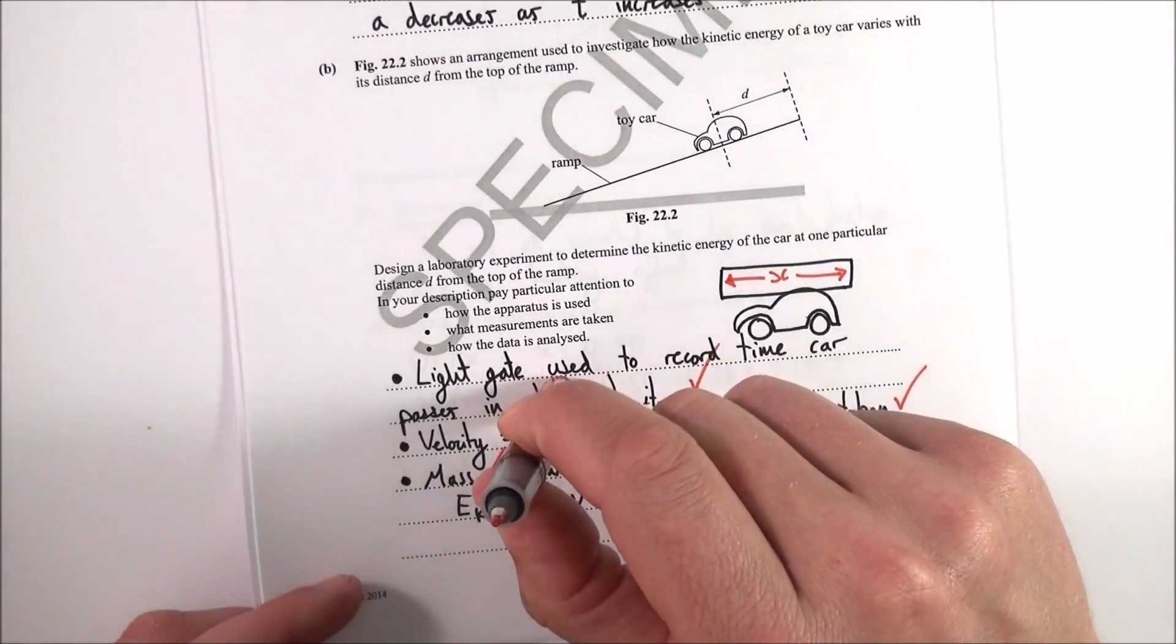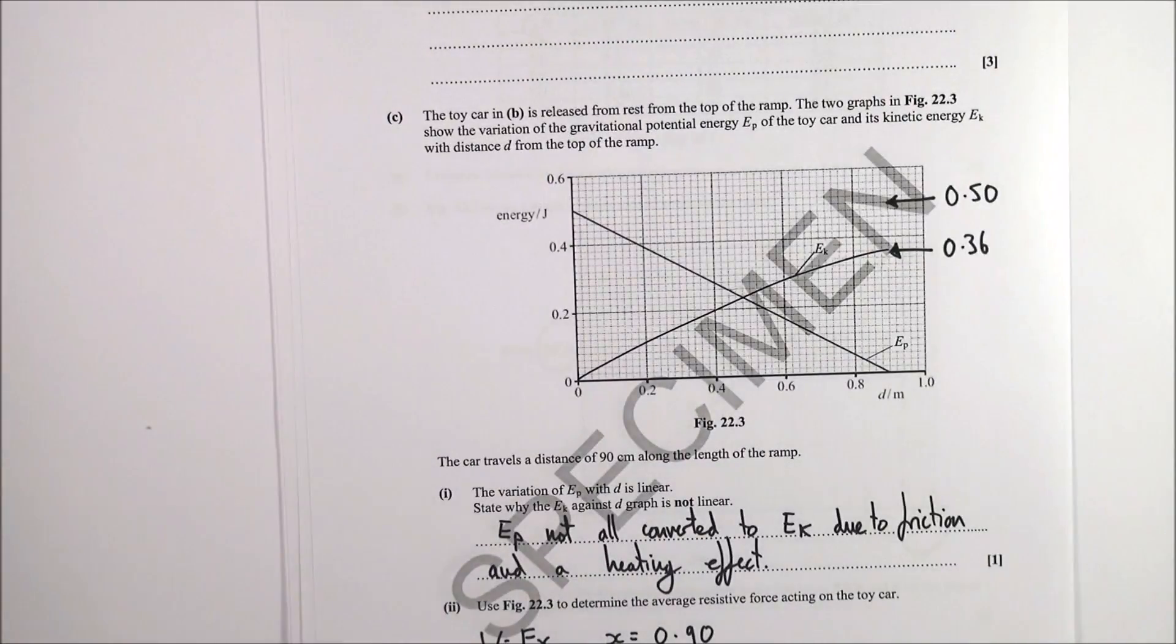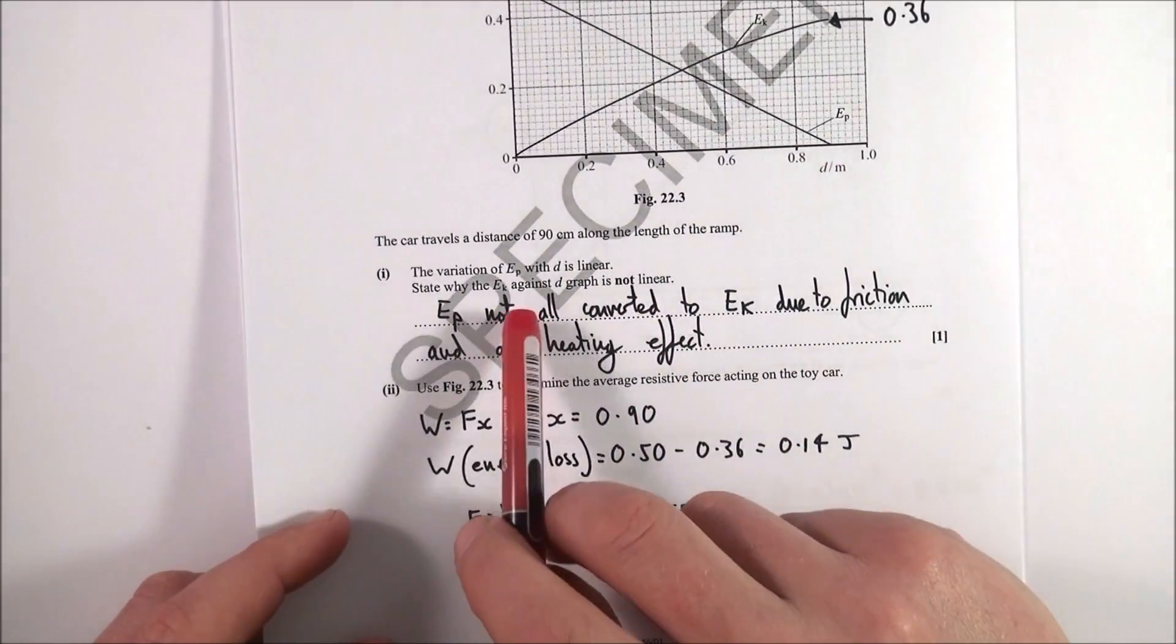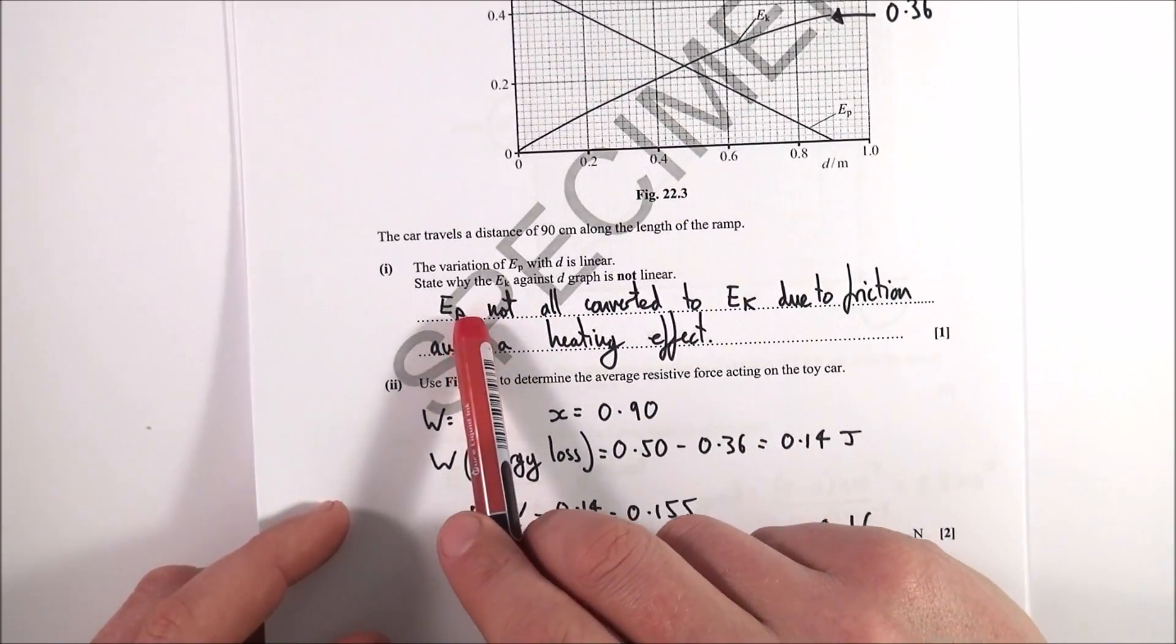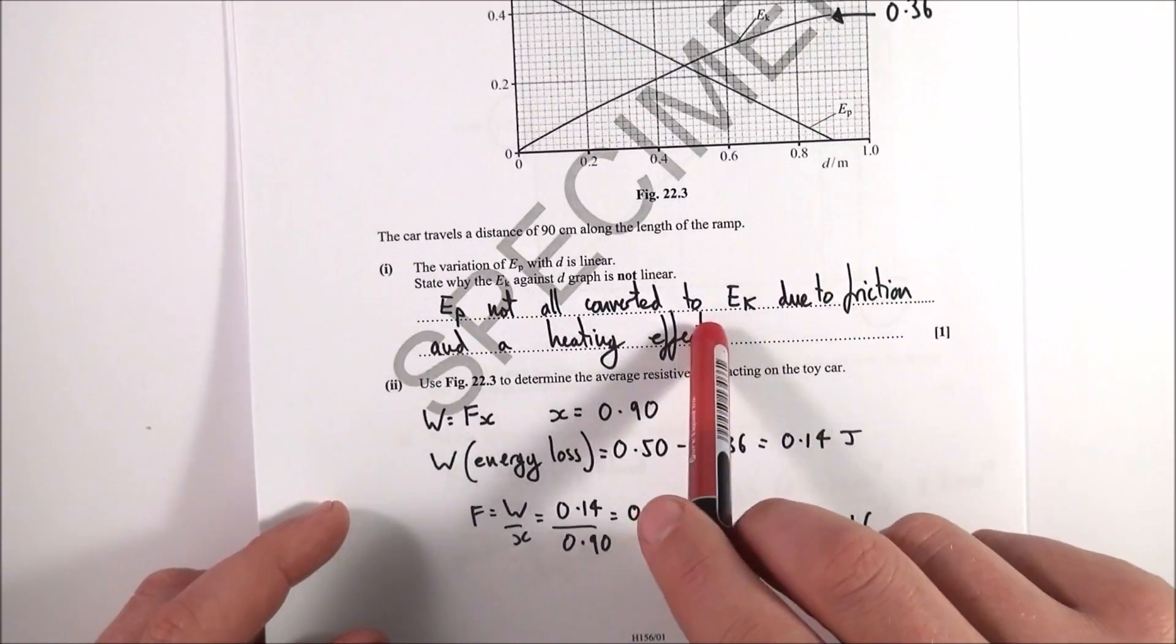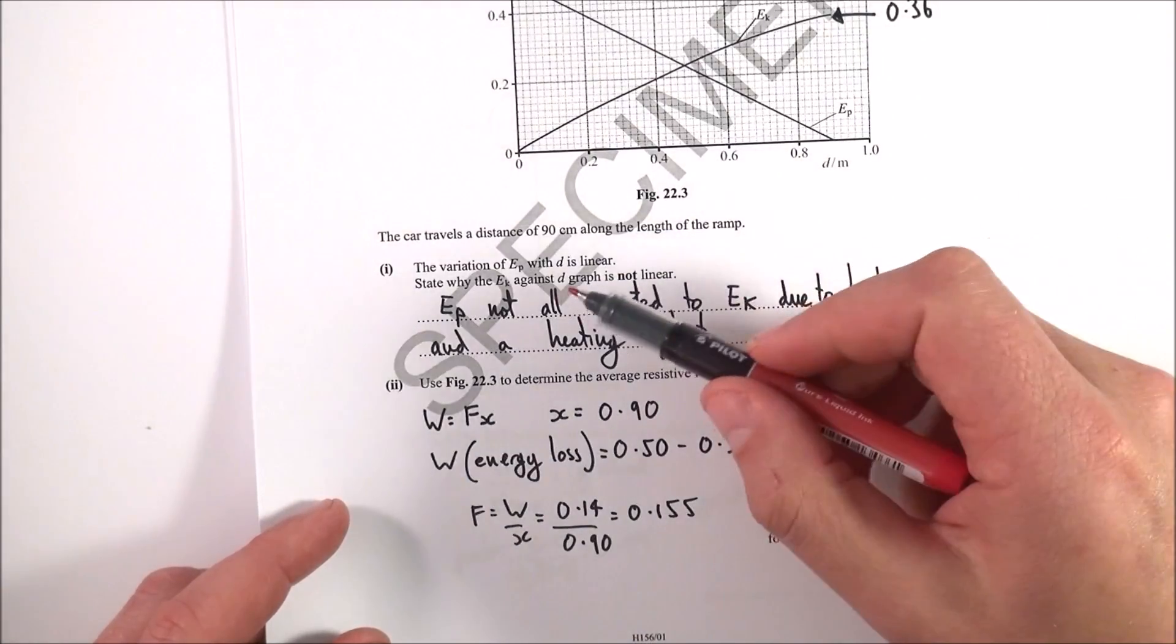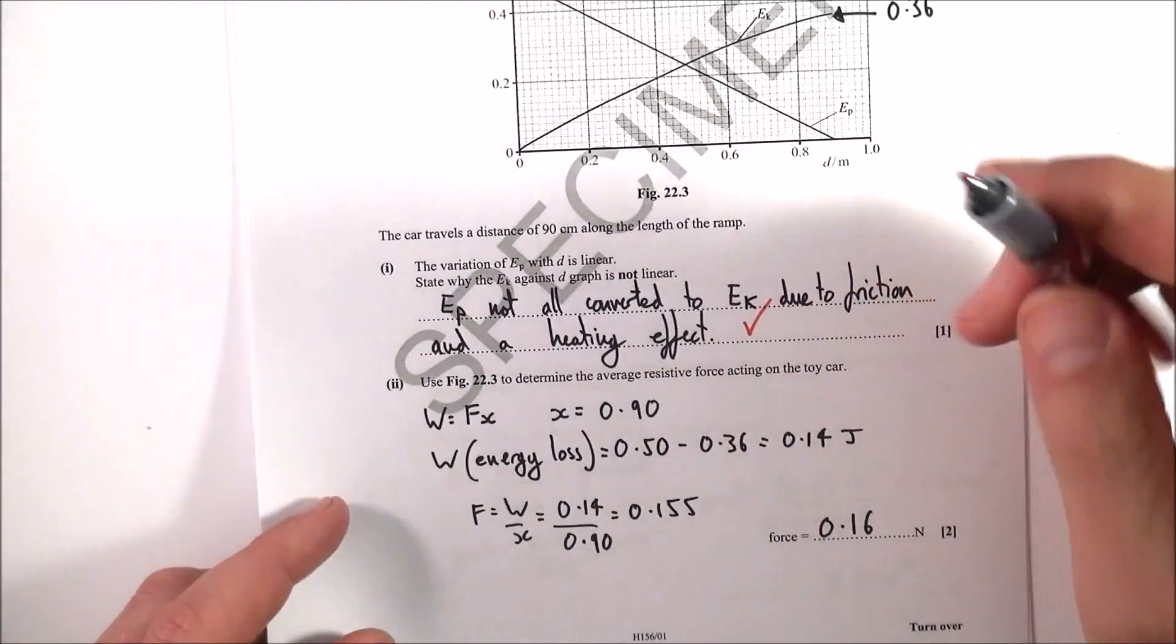So that's my answer for question B. When it comes to C, this one here, first of all, why is it not linear? Well, basically not all of the energy is converted from this potential energy that it initially has into kinetic energy at the end. And I've given a reason for that which is due to the friction, which will then effectively cause a heating effect. So we're losing energy by friction. Not all of the potential energy ends up as kinetic. Then we want to look at the average resistive force acting on the car where we know that work done equals force times distance moved in the direction of the force.